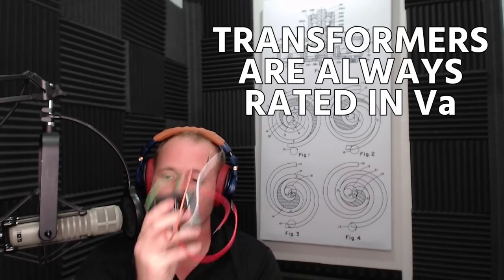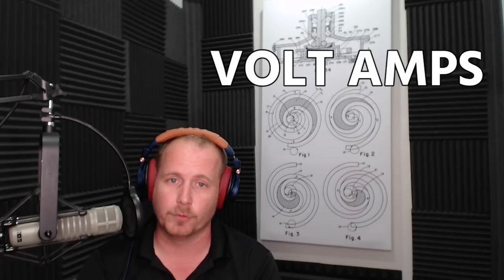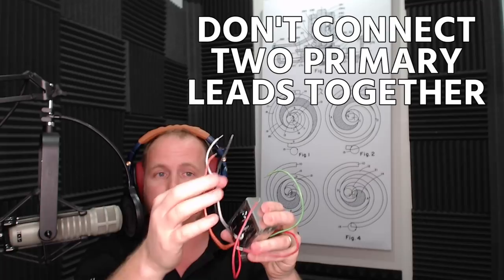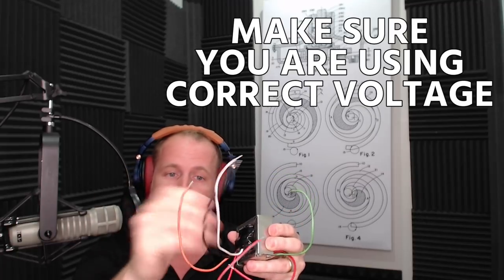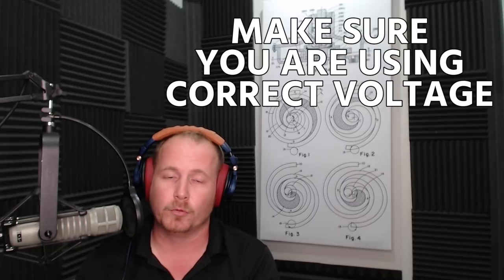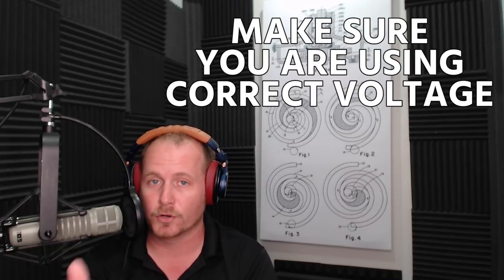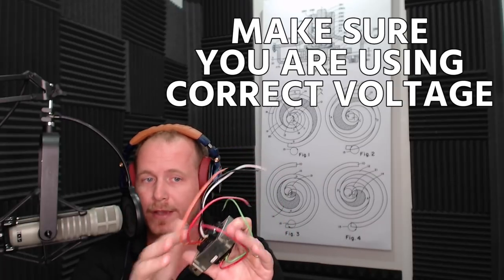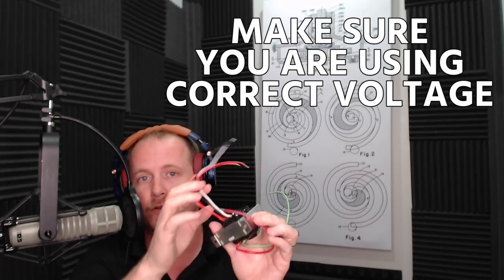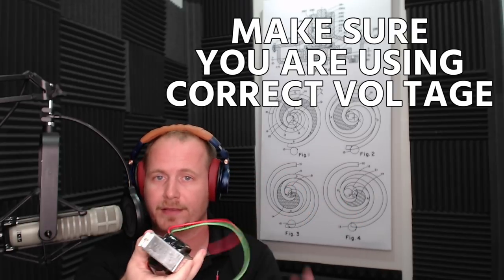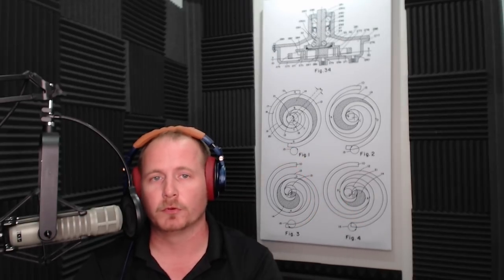Some interesting things: transformers are always rated in VA, that's volt amps, and you have to make sure that you don't overload them, make sure that you don't connect two of the primary leads together, and make sure that you're using the correct voltage. A common mistake that's made with these is people will take equipment that's either 240 or 208, they'll put it on a 208 power supply, and they won't re-tap it for 208. So you have to make sure that your primary is set up for the correct voltage in order to get the correct secondary voltage coming out the other side of it. Hopefully you found that helpful. We will talk to you again soon.